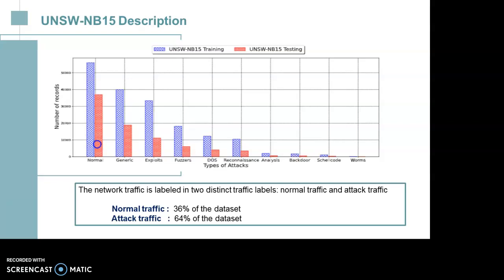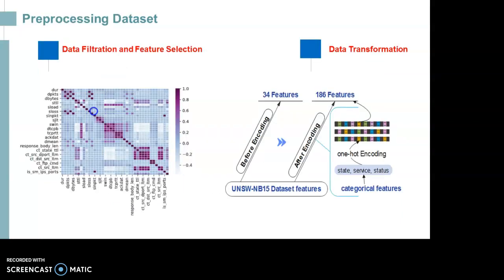Normal traffic accounts for 36% of the dataset and attack traffic accounts for 64% of the dataset. The dataset is filtered and processed to select the most relevant features for model training and testing. We used the correlation matrix to select pertinent features, and normalization and encoding methods to normalize and transform data from categorical features to numerical features.